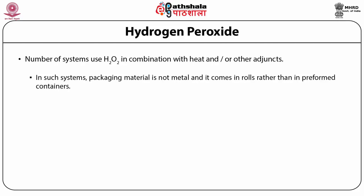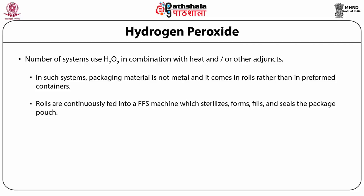In one system, the packaging material is not metal and comes in rolls rather than in preformed containers. The rolls are continuously fed into a vertical machine which sterilizes, forms, fills and seals the package. Sterilization is accomplished with a combination of hydrogen peroxide.